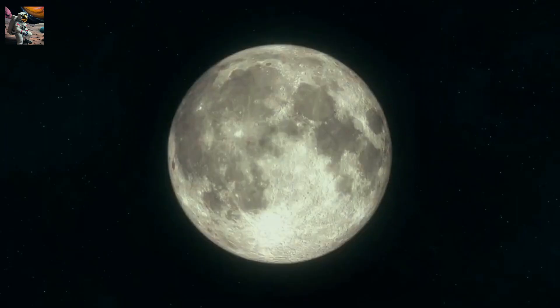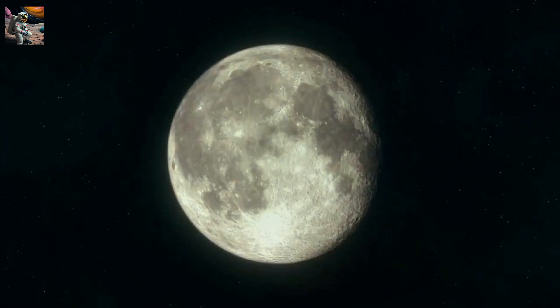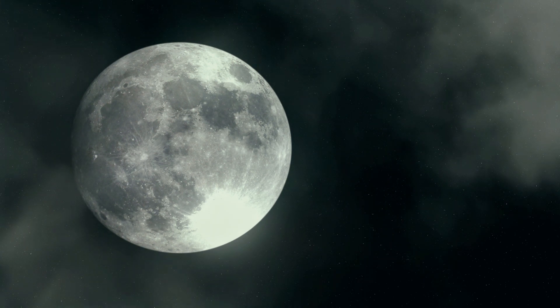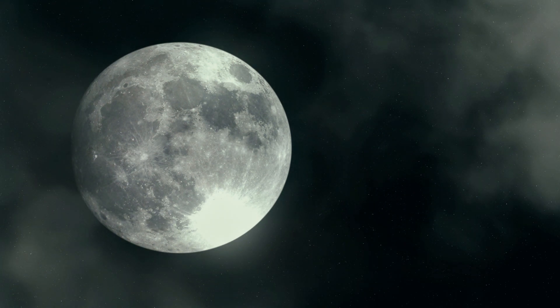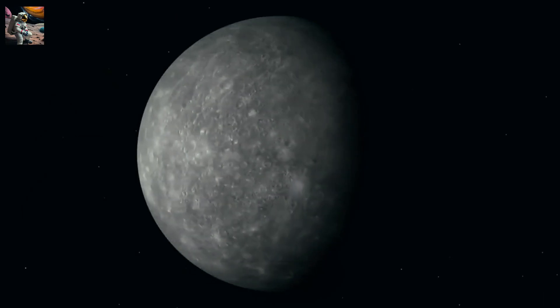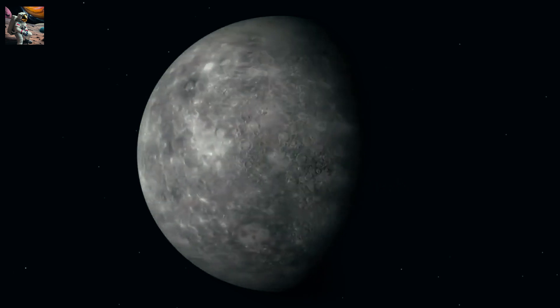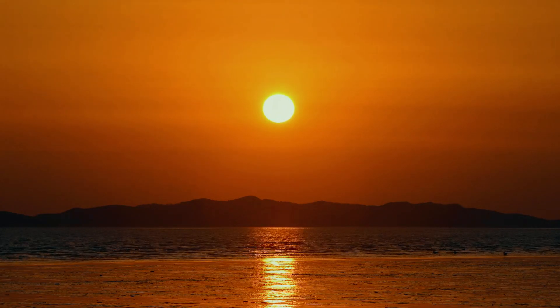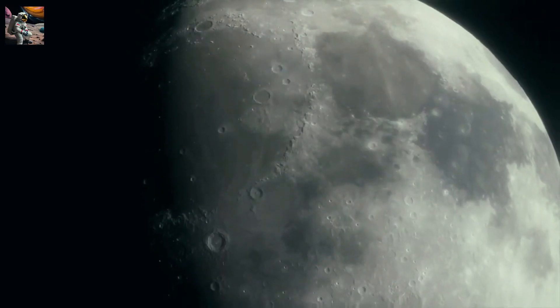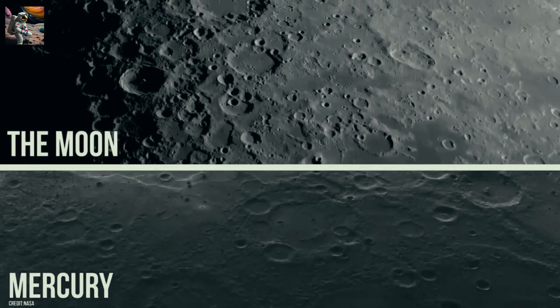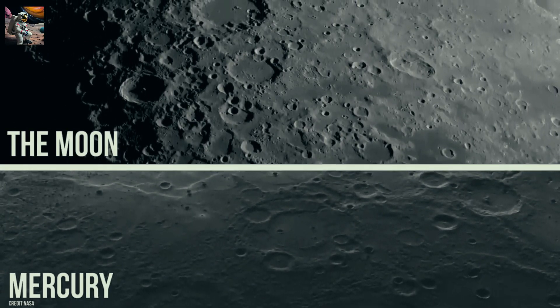Additionally, the dark regions on the moon consist of extensive planes of once-liquid rock and lava. Although liquid water is not present on the moon or Mercury, there are indications of ice on their surfaces. NASA's MESSENGER mission identified the presence of hydrogen in amounts consistent with frozen water at the north and south poles of Mercury, where sunlight rarely reaches. Recent research conducted by NASA's Lunar Reconnaissance Orbiter suggests that the Chaco crater on the moon may also harbor ice in its permanently shadowed areas. Ironically, despite the moon being considerably colder, Mercury has more abundant ice reserves on its surface.